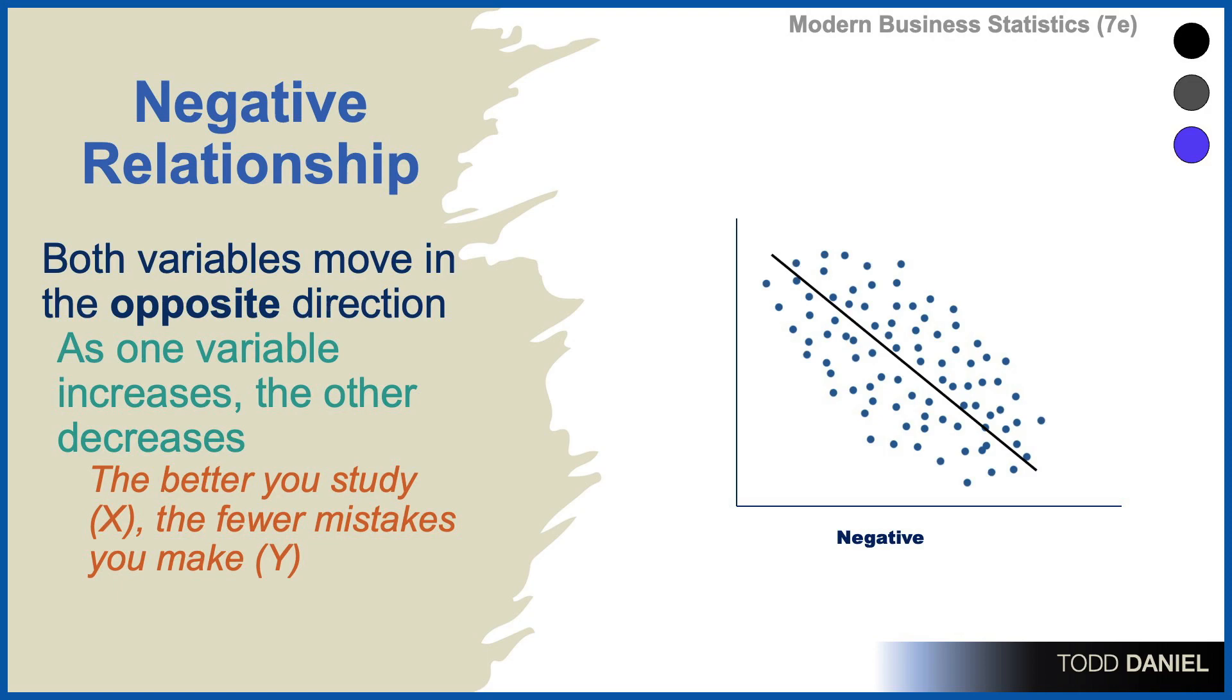As amount of time studying increases on the x-axis, the number of mistakes made decreases on the y-axis. There is a negative or an inverse relationship between these two variables.